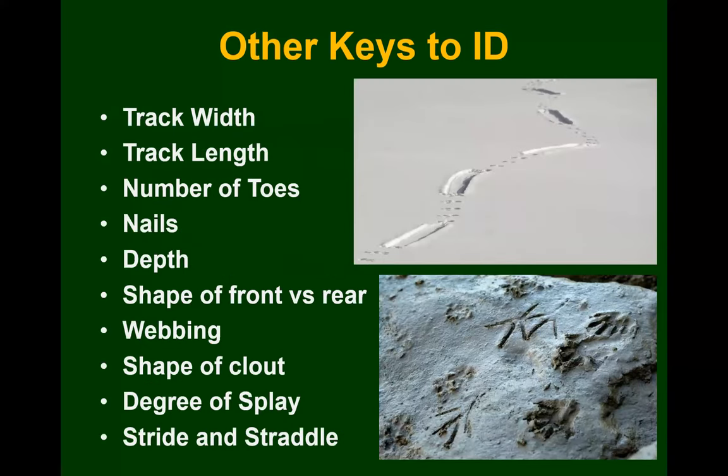Other keys to look for are the width and length of a track, the number of toes present, whether the track has nails or claws visible — that's particularly helpful when comparing cats versus dogs. The depth of the track can tell you how large and heavy the animal is. Also consider the shape of front feet versus rear feet, since some animals have different shapes for each. Other features include webbing, the shape of the clout, the degree of splay in the toes, and stride and straddle.